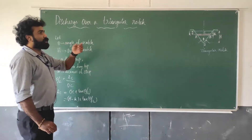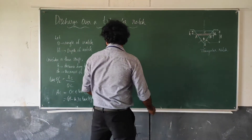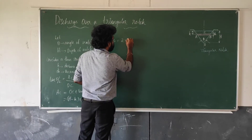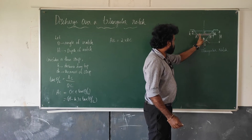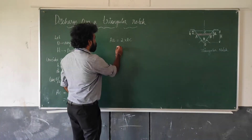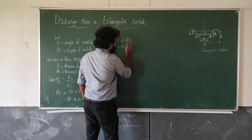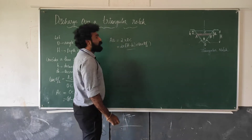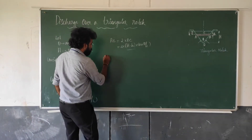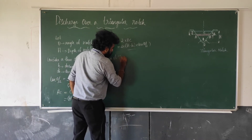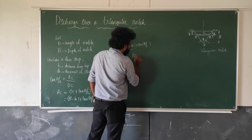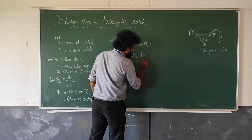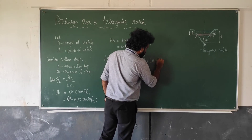Now, AB is the full width of the strip, which equals 2 × AC (symmetric about the centerline). Therefore, AB = 2(H − h) × tan(θ/2). The area of the thin strip is then: area = AB × dh = 2(H − h) × tan(θ/2) × dh.